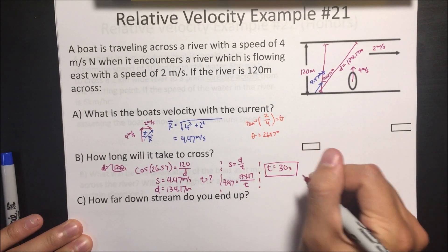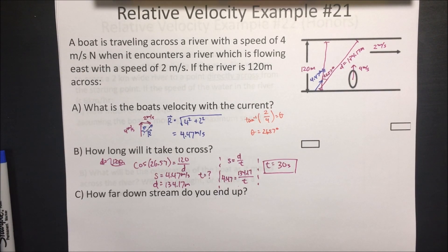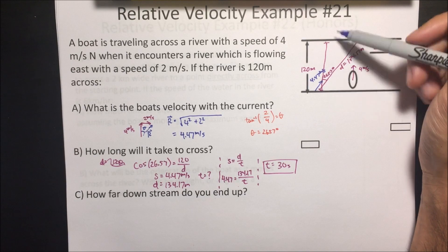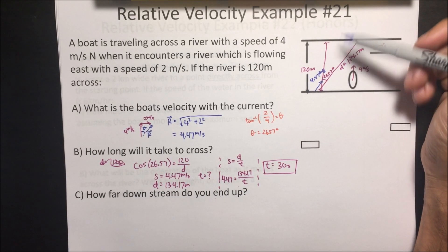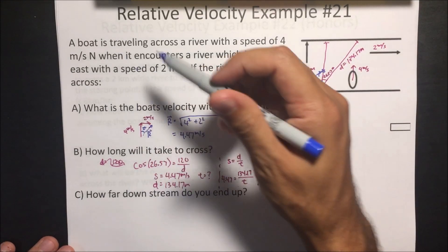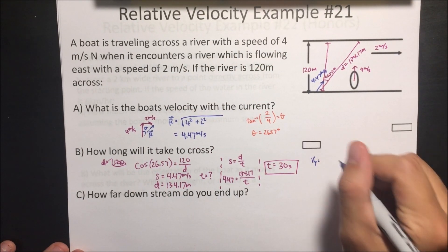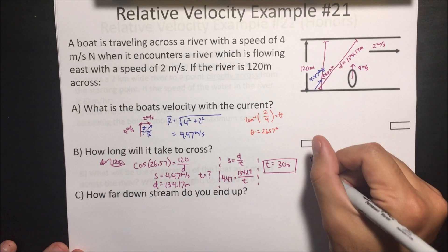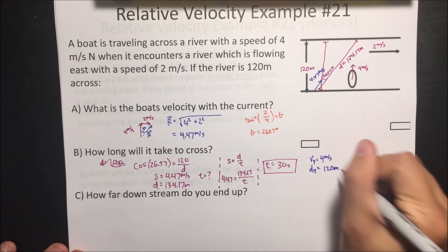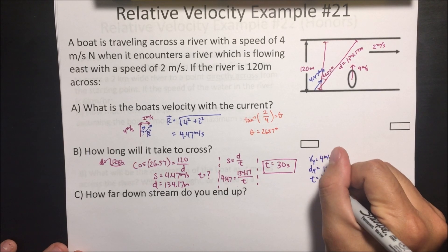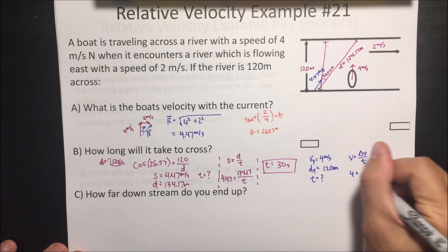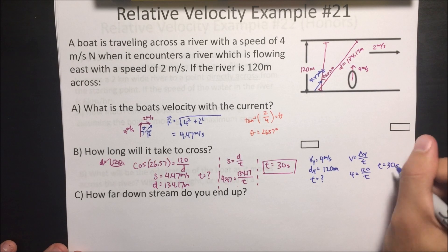There's another way to do this problem that's a lot easier — we care only about what's happening in the Y direction. The boat is moving in the Y direction with a speed of 4 meters per second, and the distance in the Y direction is 120 meters. Using velocity equals displacement in Y divided by time: 4 equals 120 divided by T, so T equals 30 seconds.